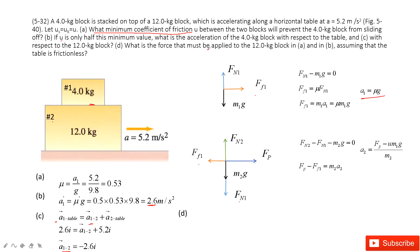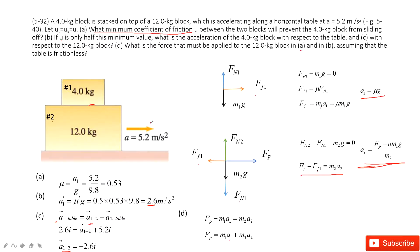The third question asks: what is the applied force on number two in both situations, assuming no friction between the table and number two? Looking at the equation, Fp minus friction equals M2 times A2, and the friction equals M1 times A1. Therefore, Fp equals M1·A1 plus M2·A2. In the first situation, A1 and A2 both equal 5.2 m/s². In the second situation, A1 becomes 2.6 and A2 is still 5.2.